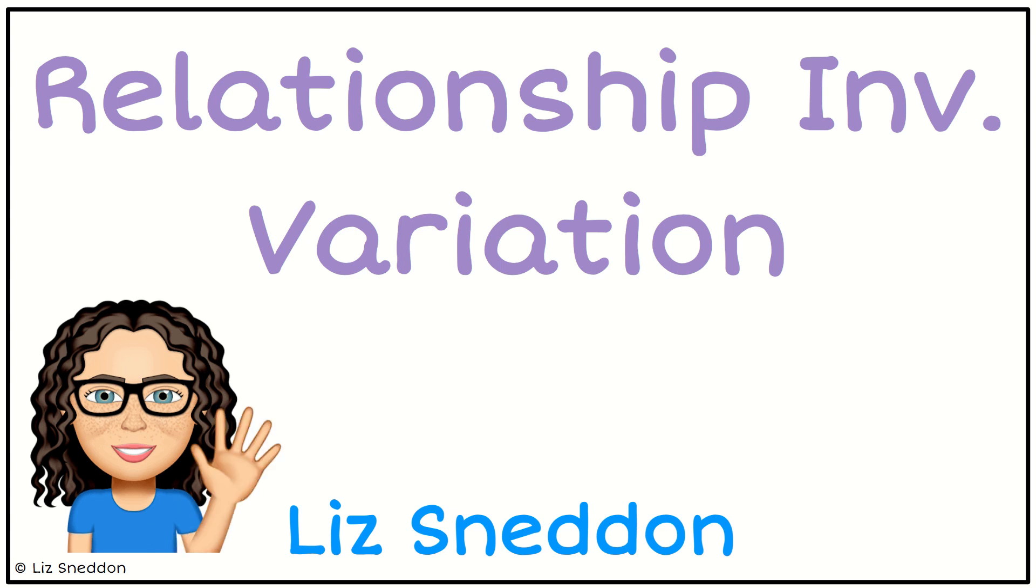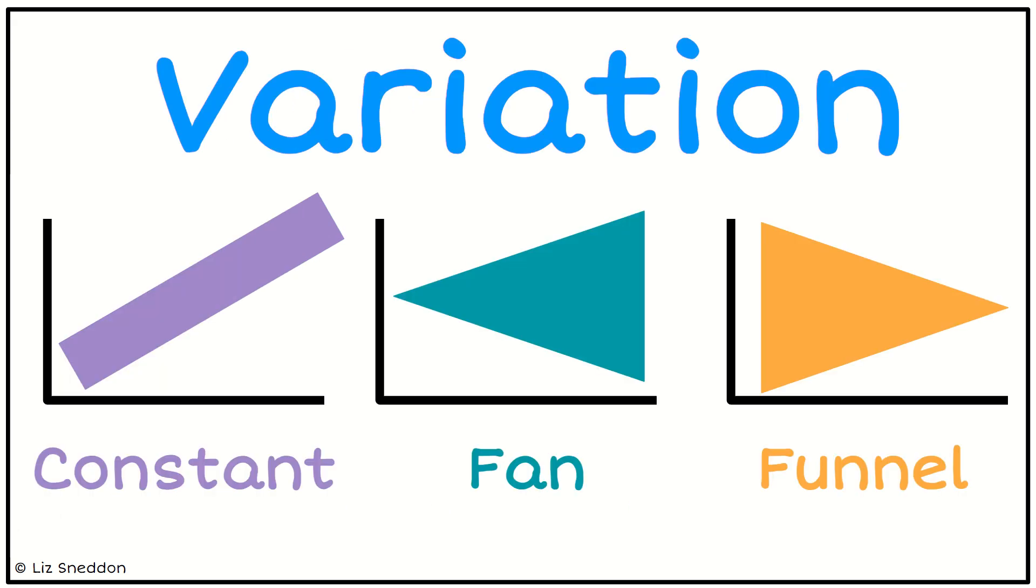Hi, it's Liz Sneddon. Let's have a look at variation when we're talking about relationship investigations. There are three main types that we look for: whether the variation is pretty constant, whether it is a fan or funnel effect, which means the variation is either increasing or decreasing.